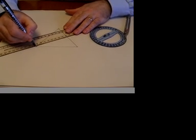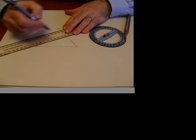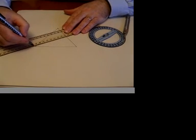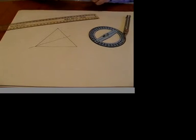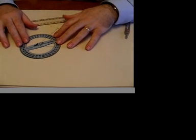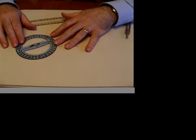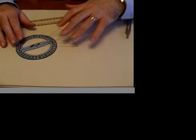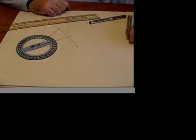Then take a ruler and draw the line from the point to where the arcs cross and that line will bisect the triangle. You can check that by measuring the angle and you can see there it's 30 degrees.